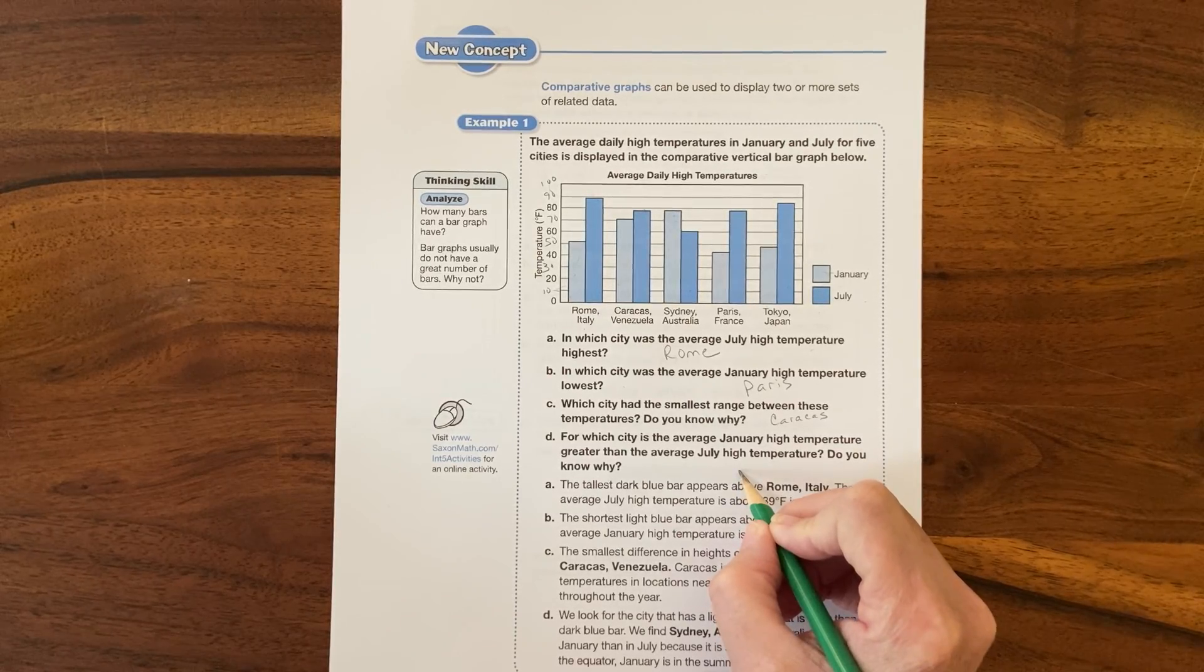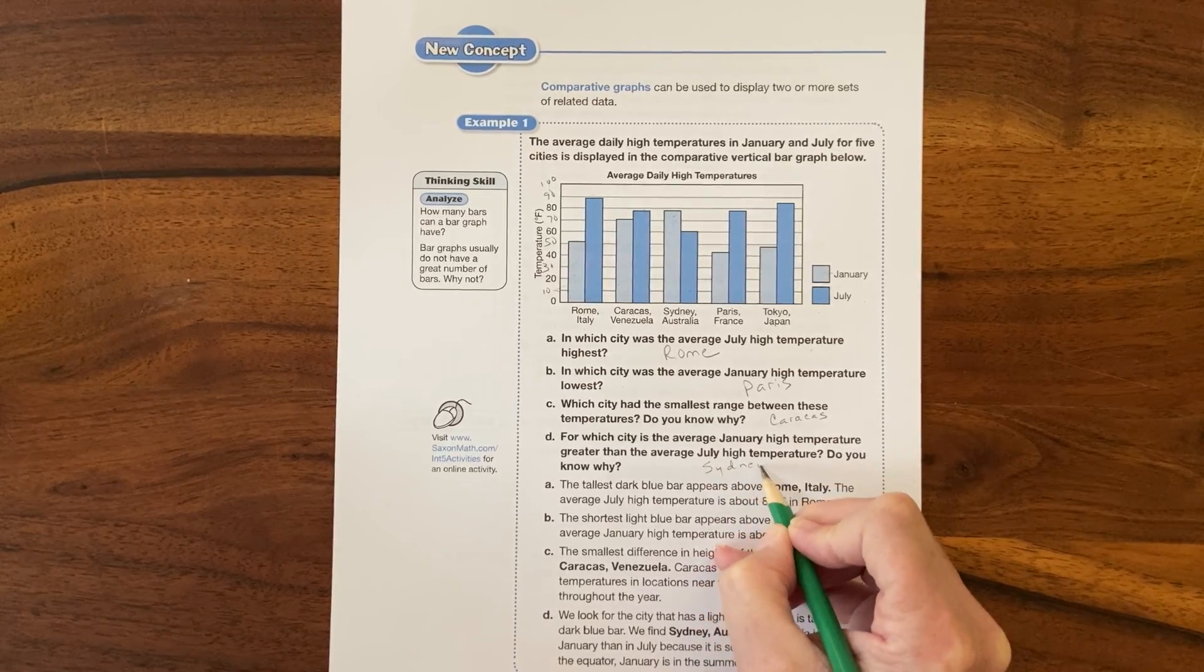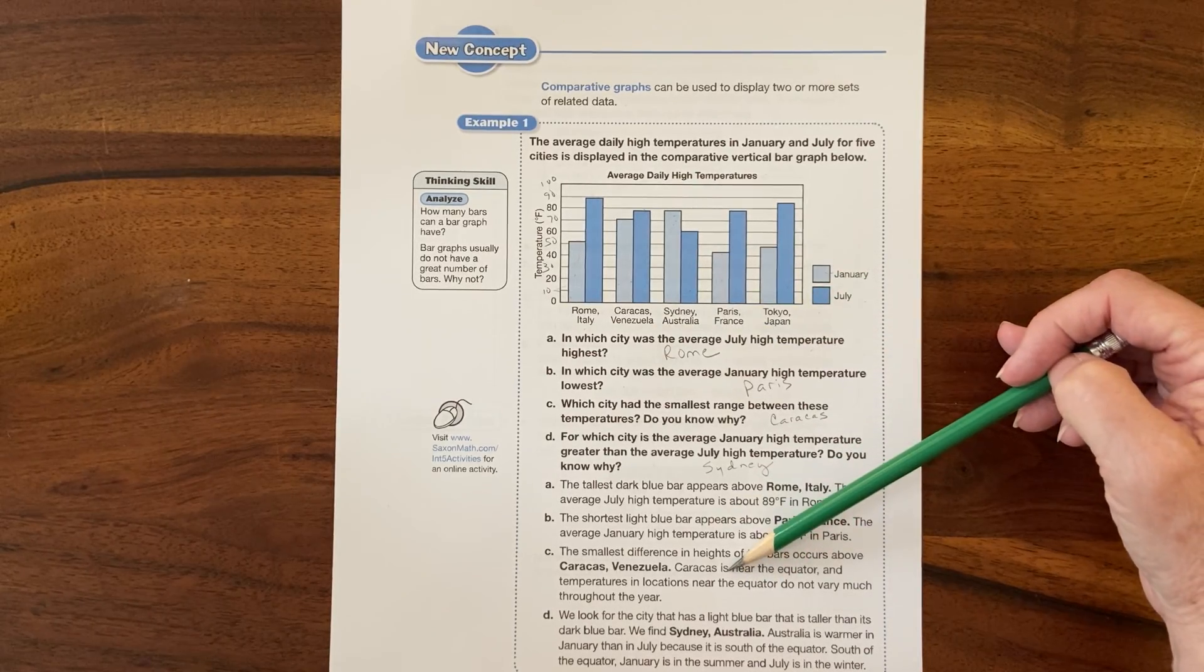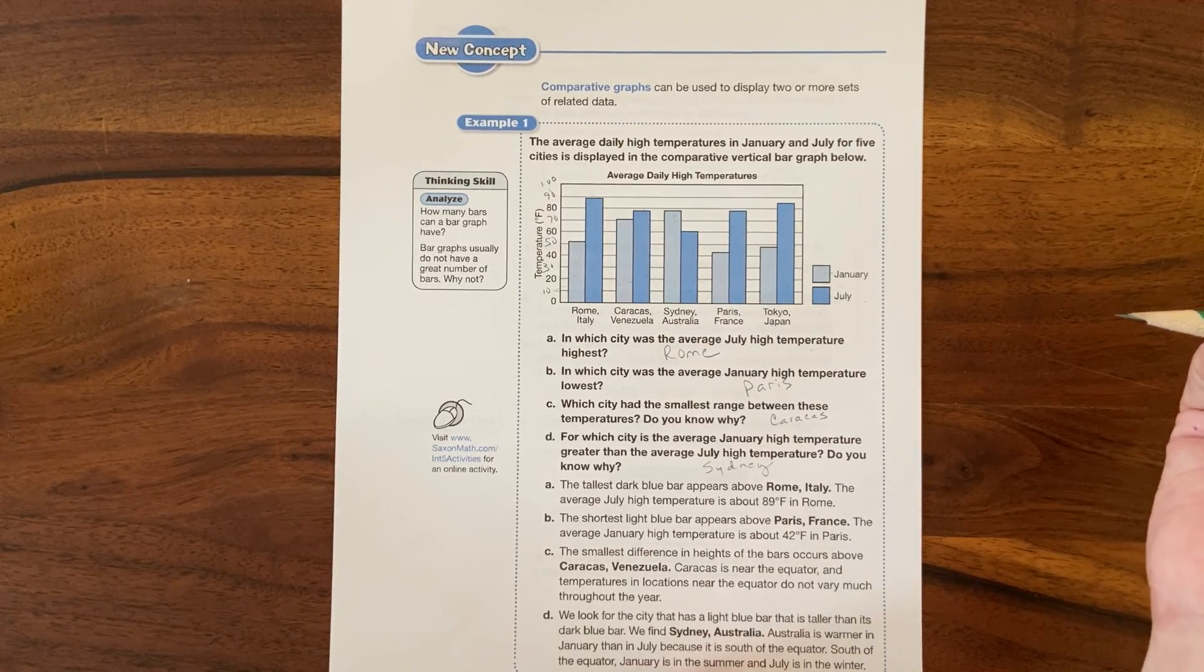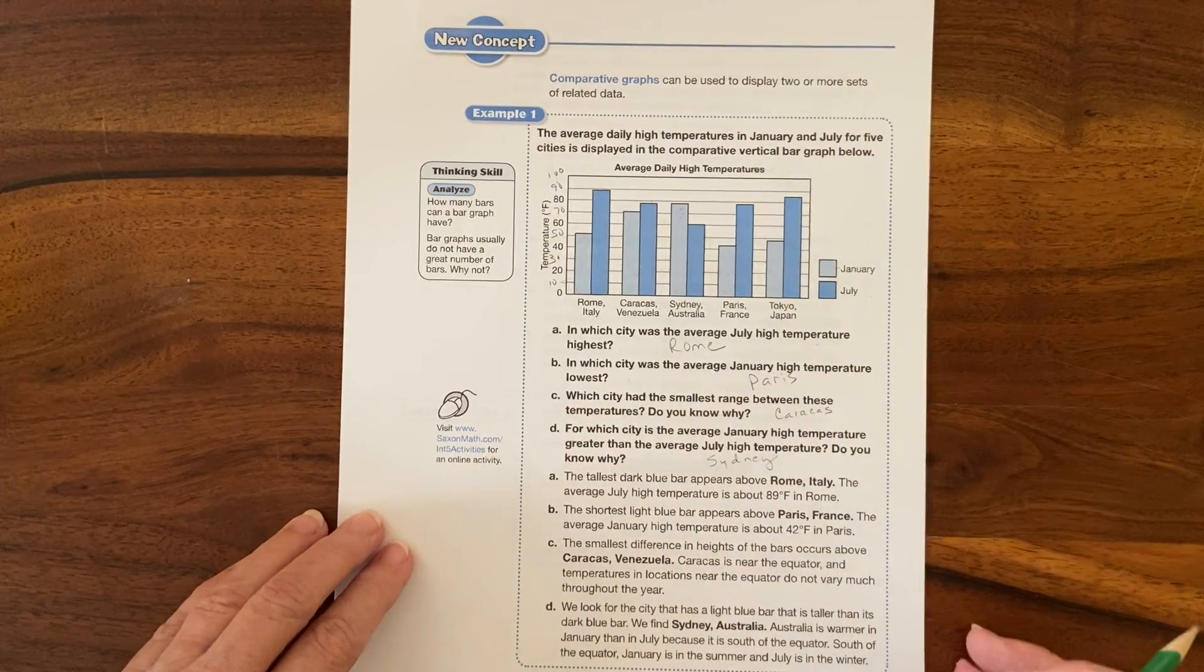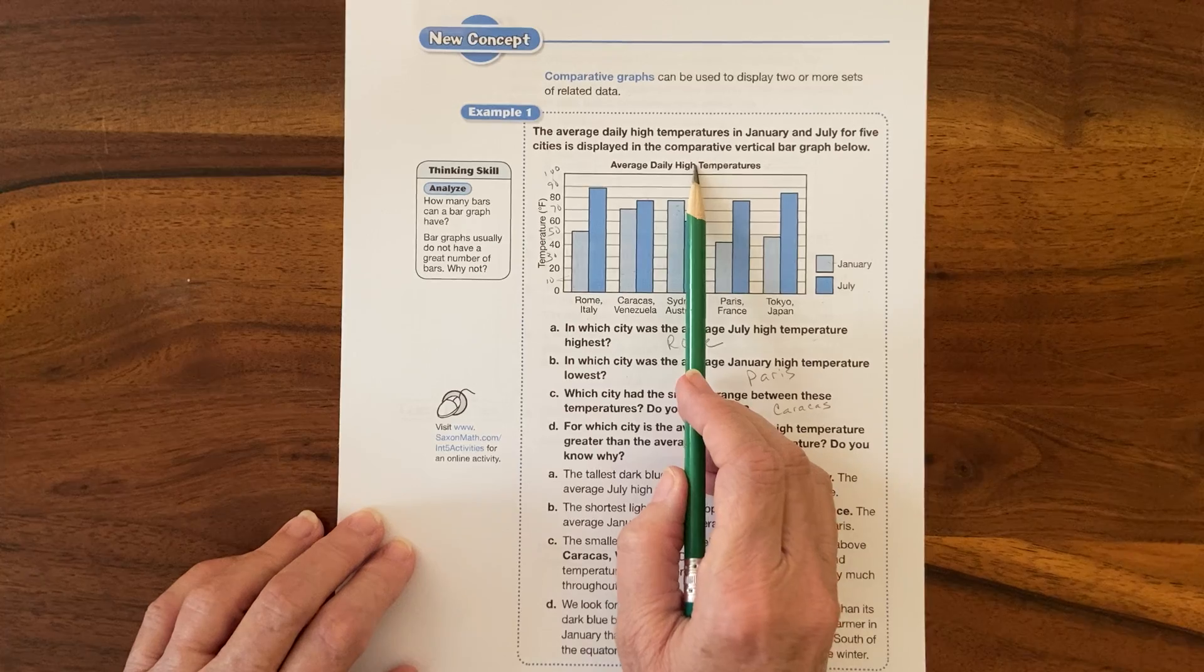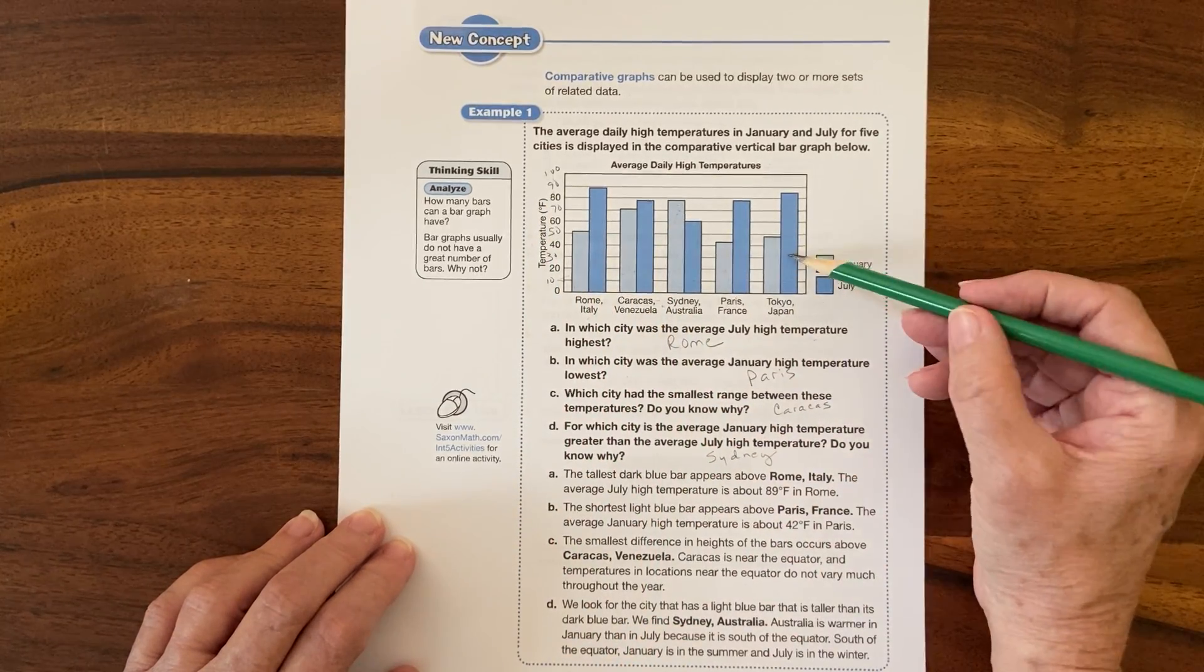So I'm gonna write Sydney here. This one's right near the equator, so temperatures don't vary as much. You know how Florida we don't get nearly as cold as in the northeast - same idea for Venezuela. And then Sydney is in the southern hemisphere. Remember your graph has your title, your labels on both axes, and then sometimes a key that gives you a little bit more information.